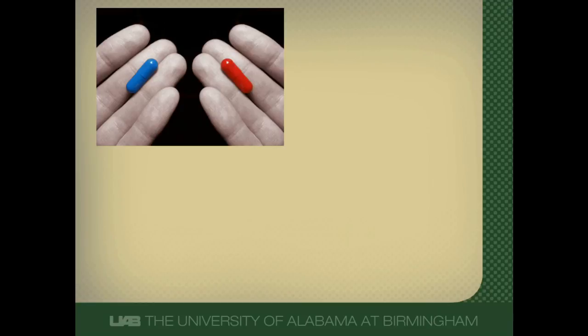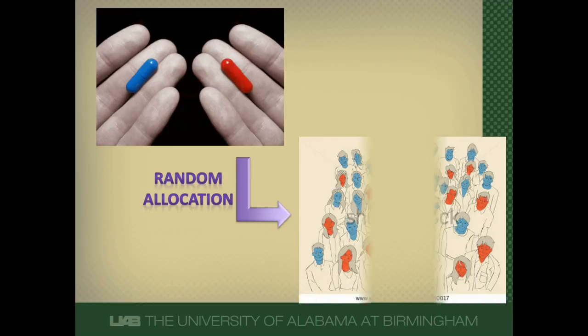Let's say you wanted to do a study to figure out if a blue pill is better than a red pill at preventing death. The best way to do a therapeutic study is to do a randomized controlled trial. So you would randomize patients to a blue pill and a red pill, and you'd have an equal distribution of prognostic factors between those on the blue pill and the red pill.